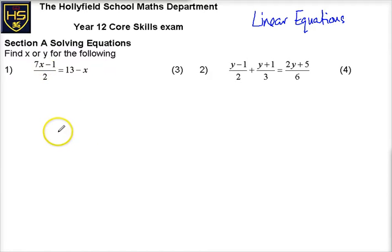Let's look at this one, number 1. We've got an equation here, and you can see instantly the left hand side 7x minus 1 all over 2 as a fraction. So let's rearrange that, let's multiply everything by 2.